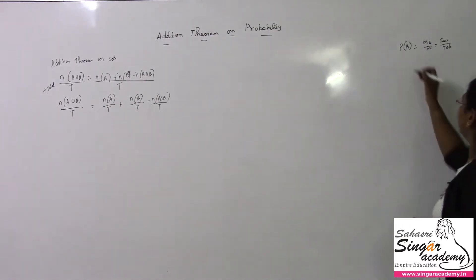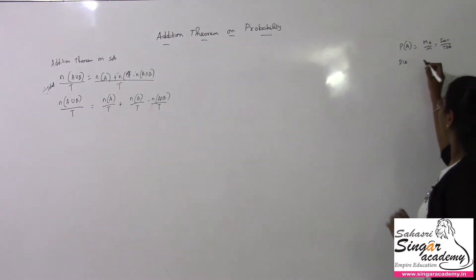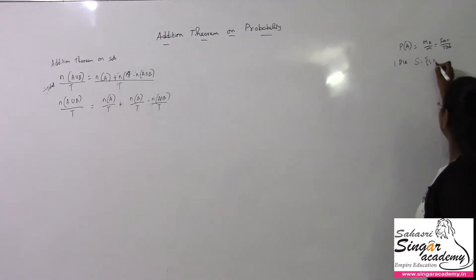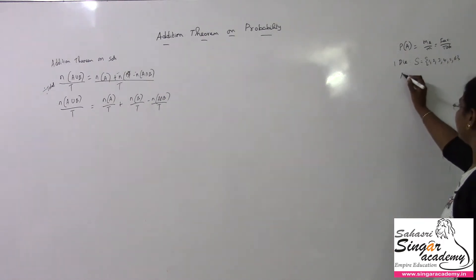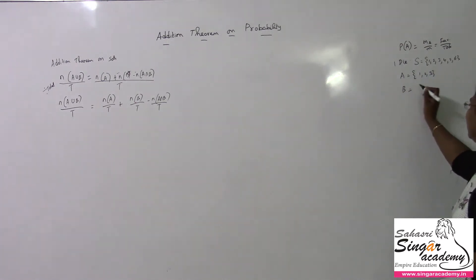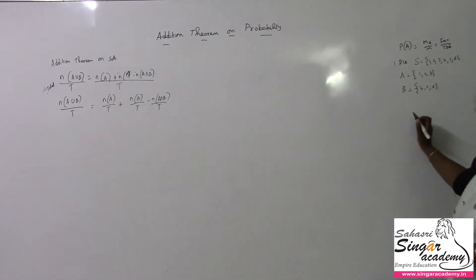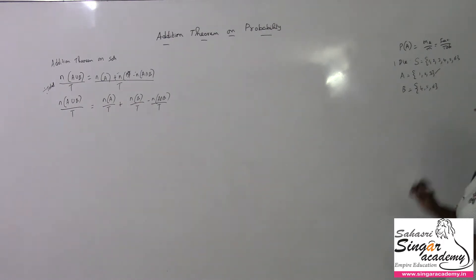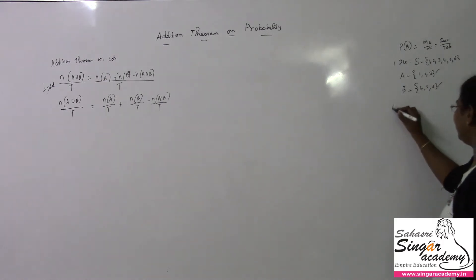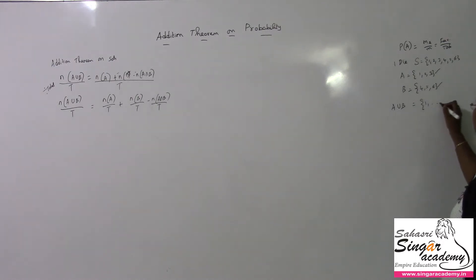Let me take a die. You know the sample space: 1, 2, 3, 4, 5, 6. Let me define event A as {1, 2, 3} and event B as {4, 5, 6}. Then A ∪ B will be {1, 2, 3, 4, 5, 6}.